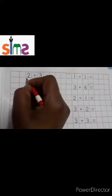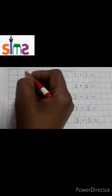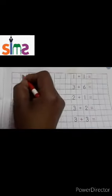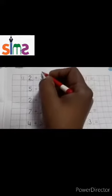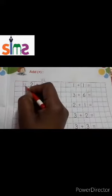We have two numbers. We'll draw this line: one, two. Next number is three. We'll draw this line: one, two, three. Now we'll count all the lines: one, two, three, four, five. How many lines are there? Five. So two plus three is equal to five.